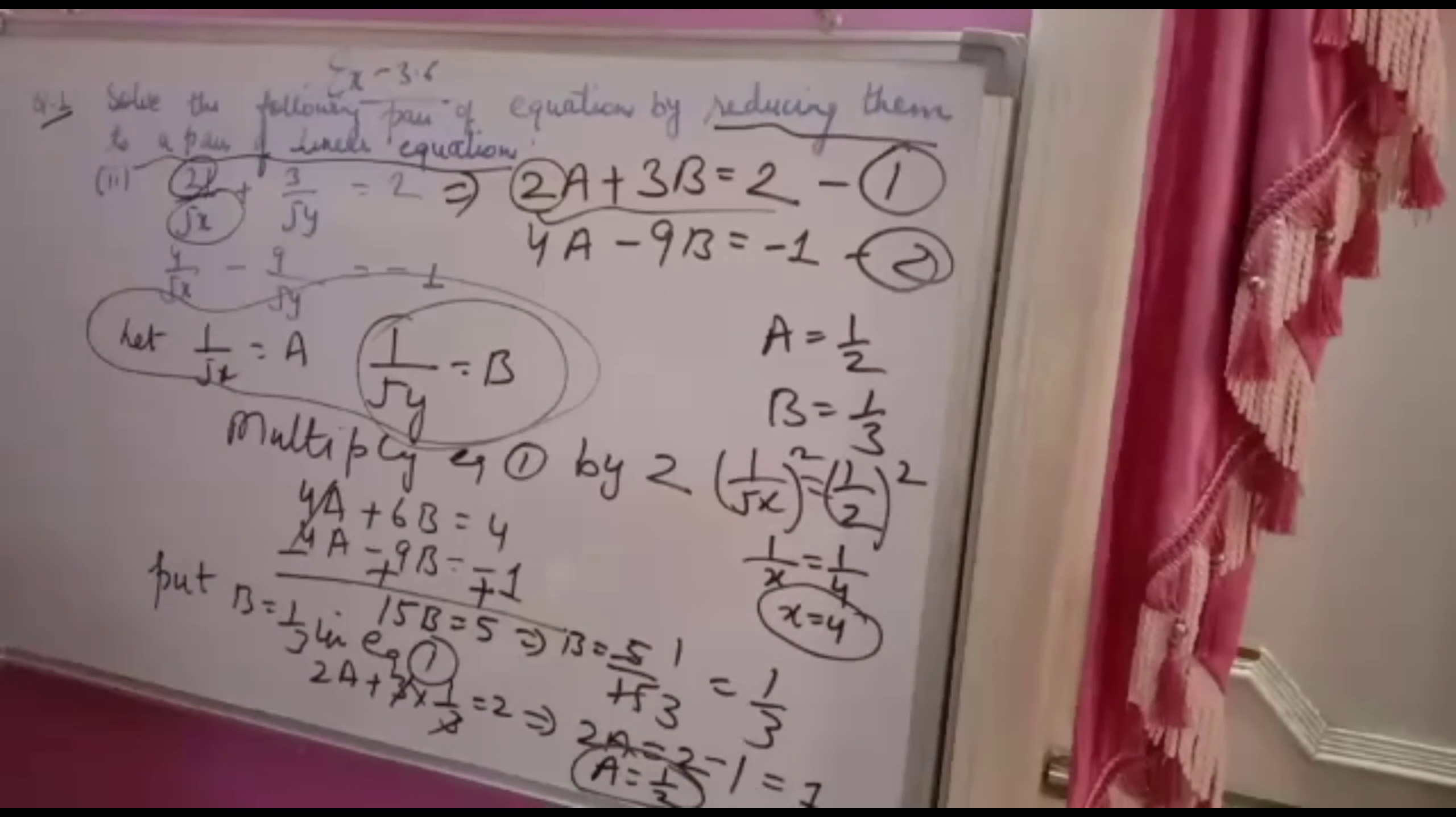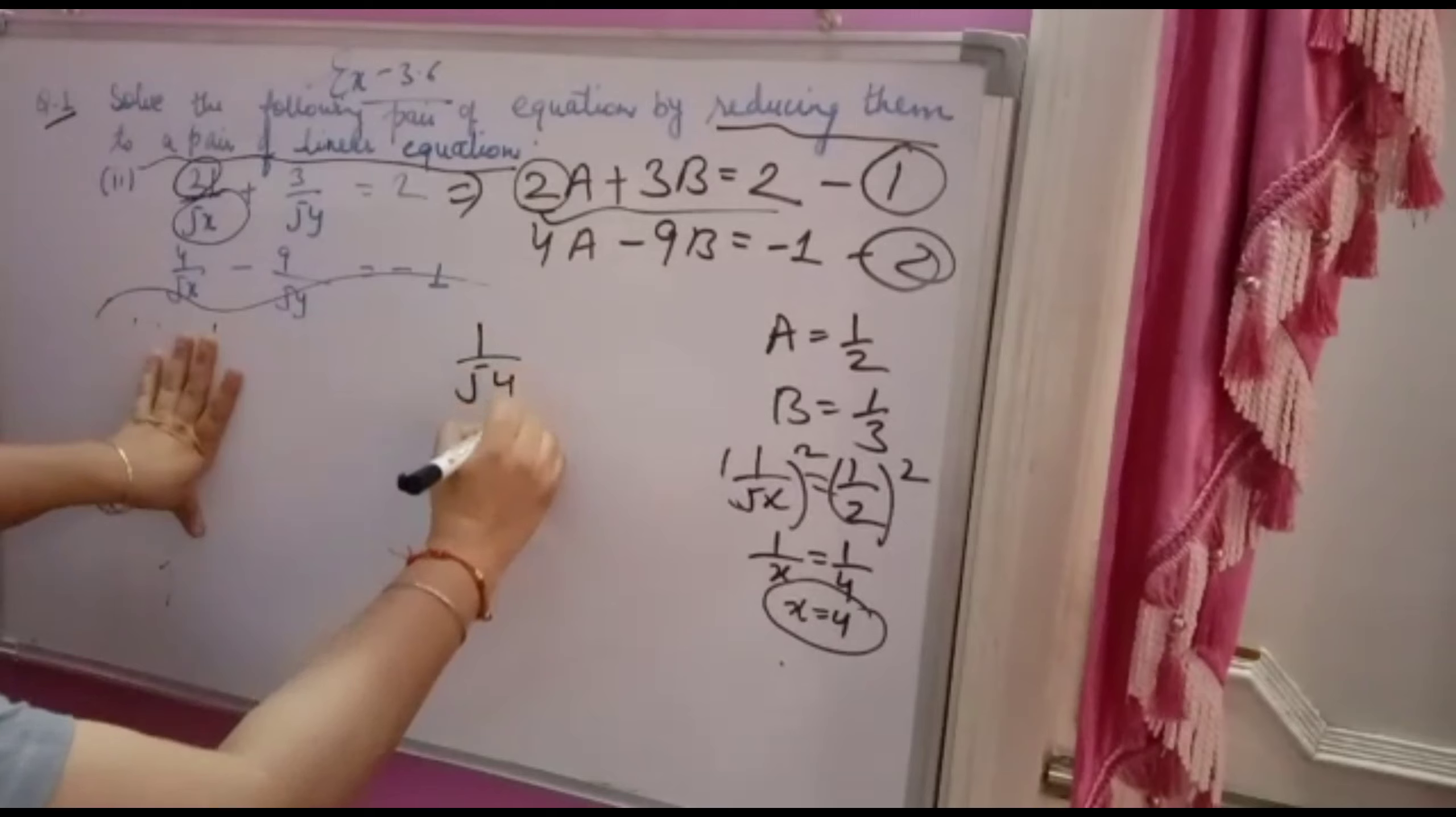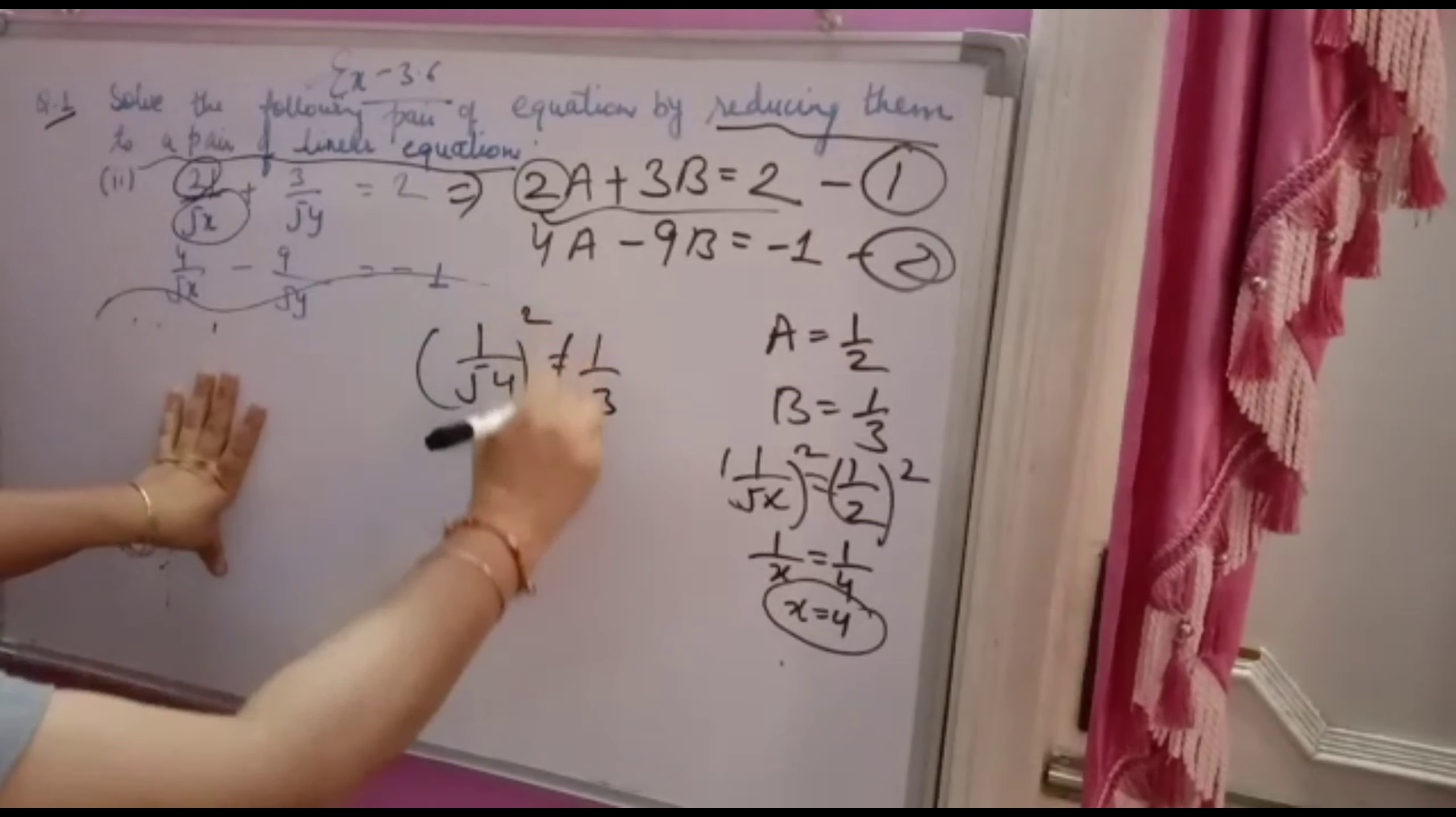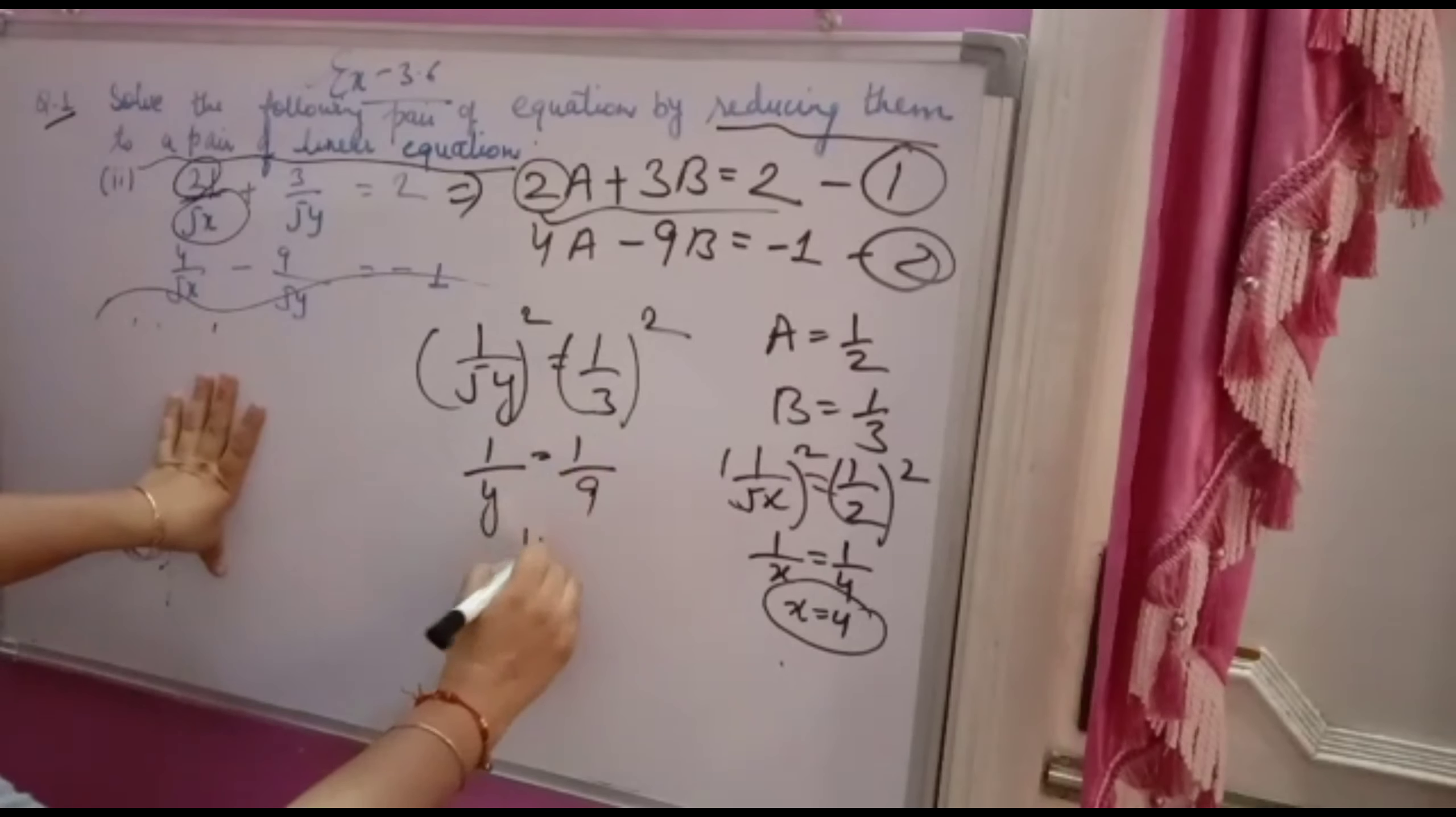Similarly, you will solve for y. Now you assume that 1 over root y is equal to B. B is 1 by 3. Similarly you will square both the sides: 1 square is 1, root y square is y, 1 square is 1, and root 3 square is 9. So 1 over y is 1 over 9, so y is equal to 9.